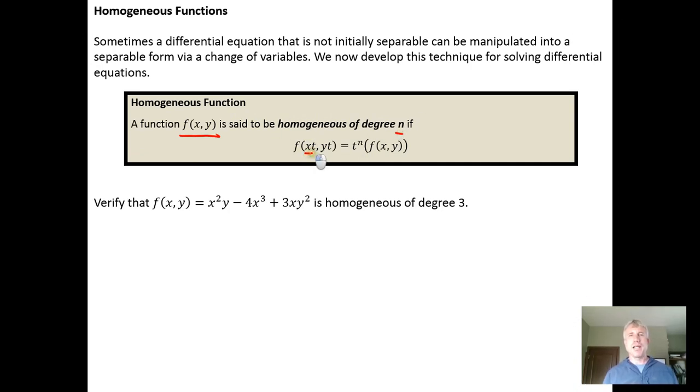If you plug in xt and yt for x and y, if this simplifies to t to the nth power times the original function f of xy, then we say that the function f of xy is homogeneous of degree n.